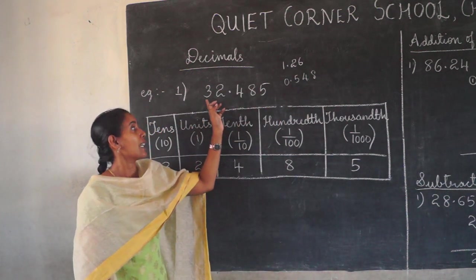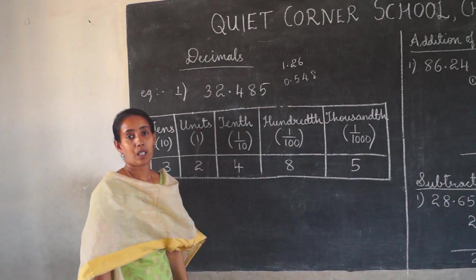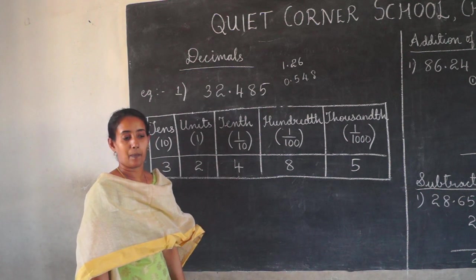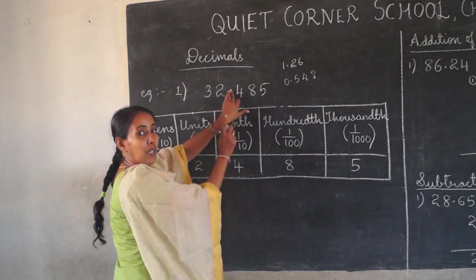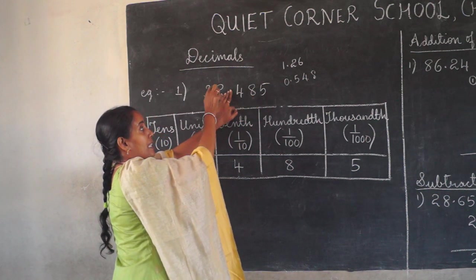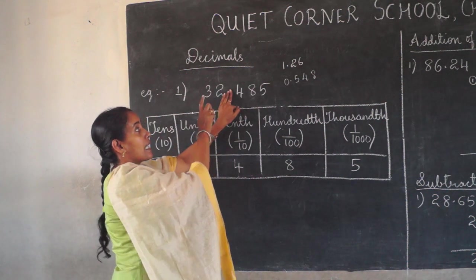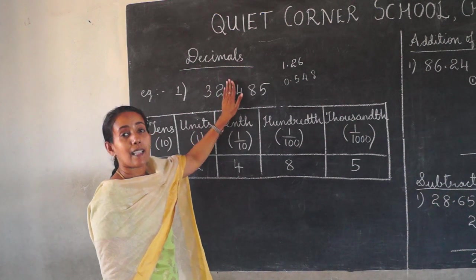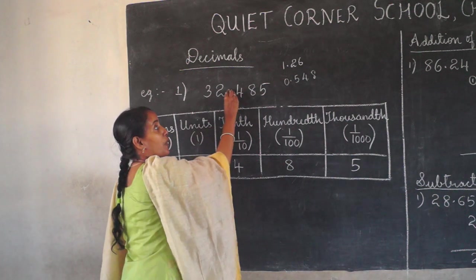Now see this example: 32.485. What are the place values of such a decimal number? If a decimal point is not there, then this place is the units place, this is the tens place, hundreds place, thousands place, ten-thousands place. So you can read the number as 32,485. But that is not the case for a decimal number — this is 32.485.